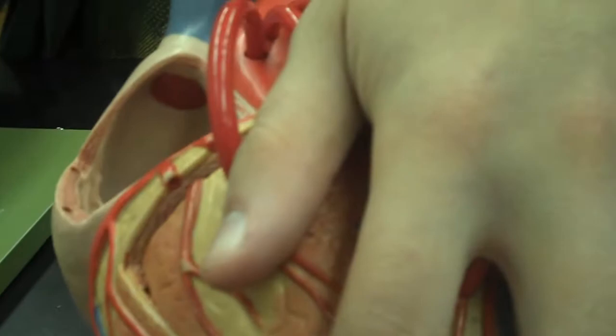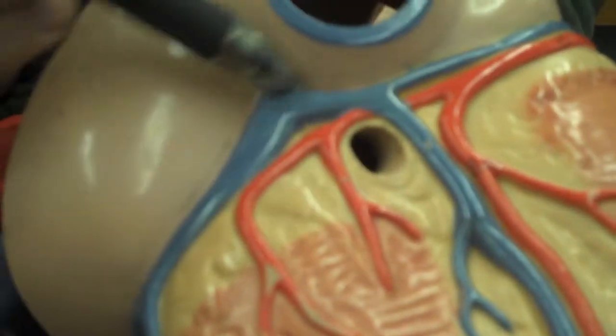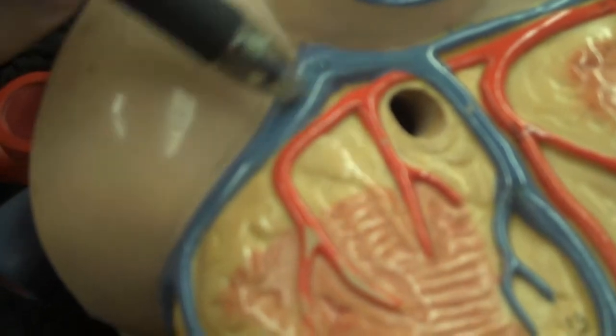Next, something you can't see on this model, but you can see on this one, is the coronary sinus, which is where this coronary circulation gets brought back into the heart.